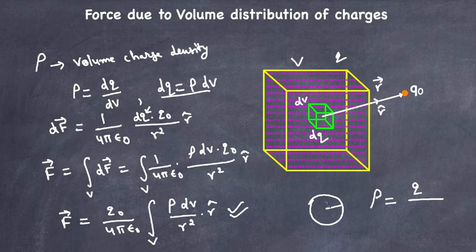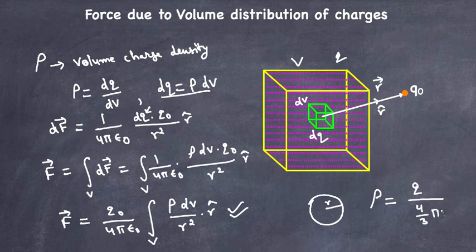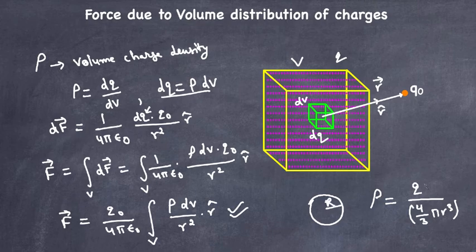let's say if the radius is R of the sphere, then ρ is going to be Q over 4/3 π R cubed. Remember this r is different, so this is a capital R just to differentiate both r's.